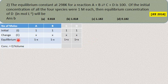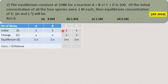Number of moles at equilibrium: A = 1 minus x, B = 1 minus x. For C: initially 1 mole was already present, plus x moles formed, so C = 1 + x at equilibrium. Similarly D = 1 + x at equilibrium. With volume taken as 1, concentrations equal the number of moles.